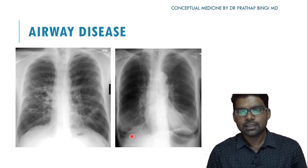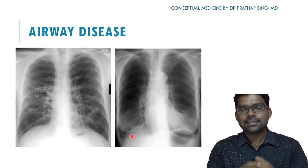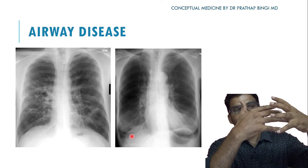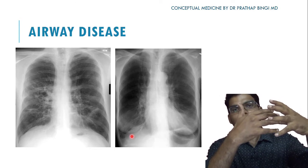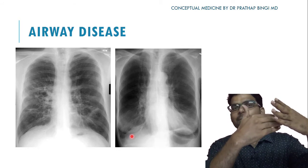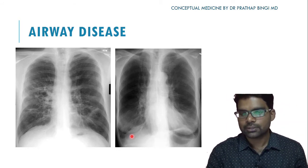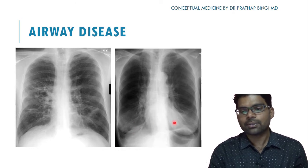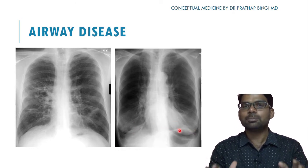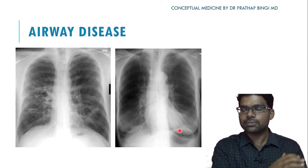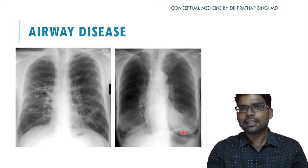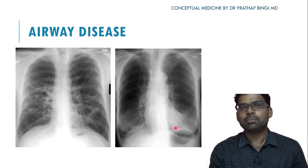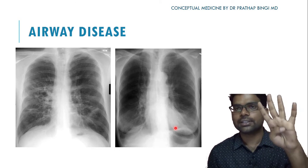Number two is decreased vascular markings — because of air trapping and hyperinflation, bronchovascular markings are obliterated, making the lung appear black. Number three is flattening of the diaphragm due to hyperinflation. Number four is a tubular heart — the heart takes on a tubular shape. These are the four cardinal features of COPD on chest X-ray.